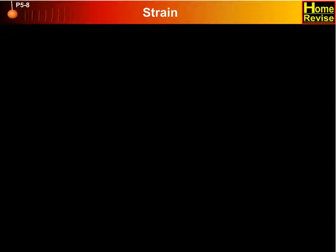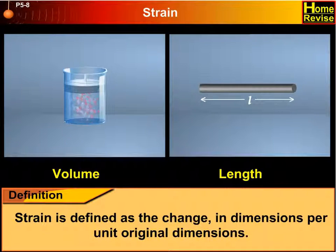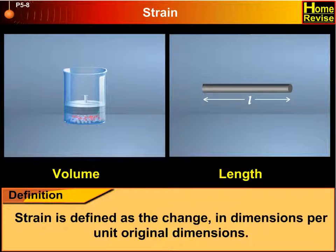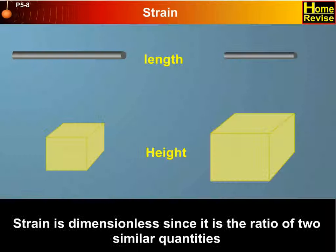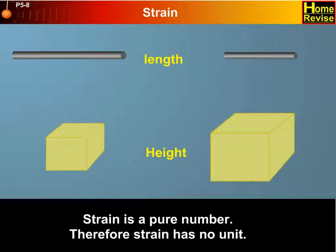Strain is defined as the change in dimensions per unit original dimensions. Strain is dimensionless since it is the ratio of two similar quantities. Strain is a pure number. Therefore, strain has no unit.